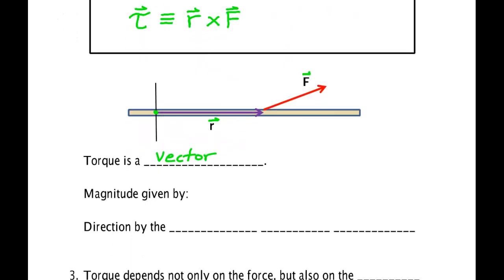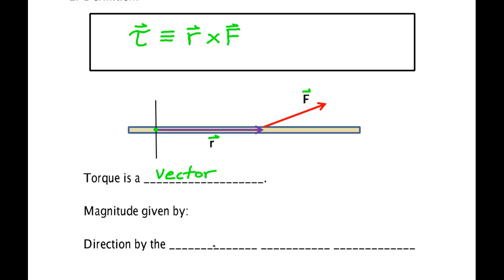To find the magnitude, you simply take the magnitude of the first vector r, the magnitude of the second vector F, and the sine of the angle between them.